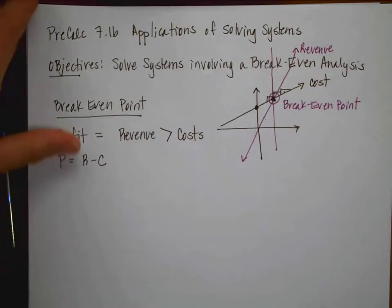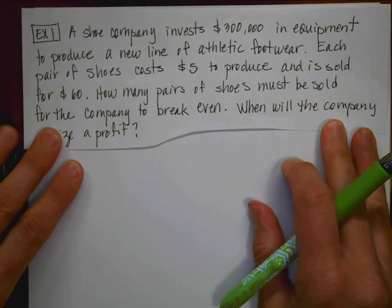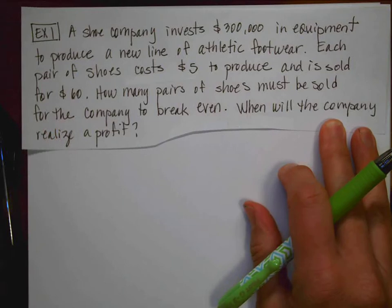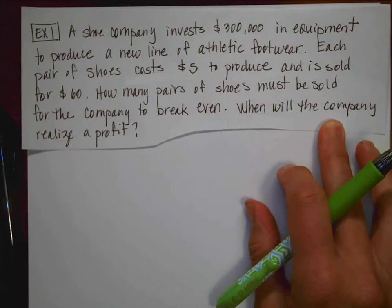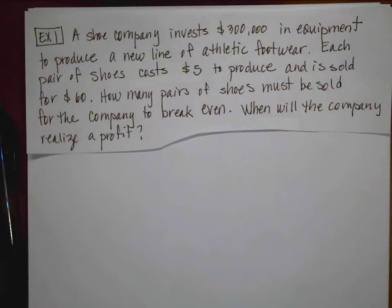So for the first example, I've gone ahead and written down the problem. This example says a shoe company is going to invest $300,000 in equipment to produce a new line of athletic footwear. Each pair of shoes costs $5 to produce and is sold for $60. How many pairs of shoes must be sold for the company to break-even and then when will the company realize a profit?